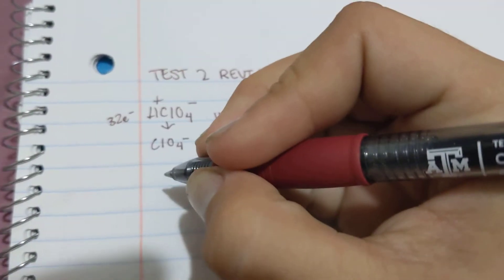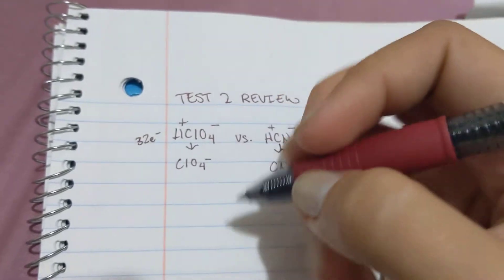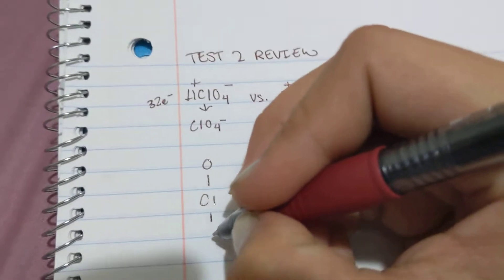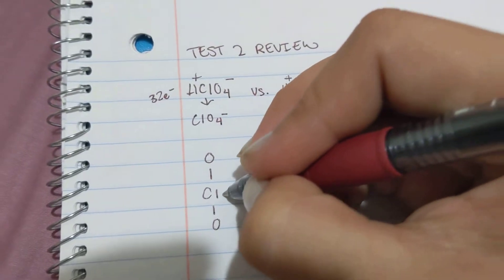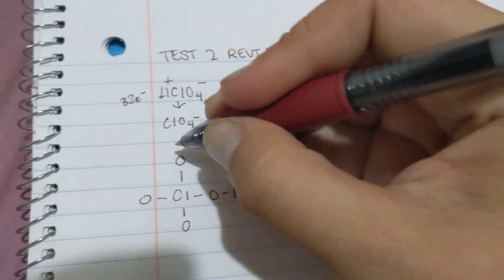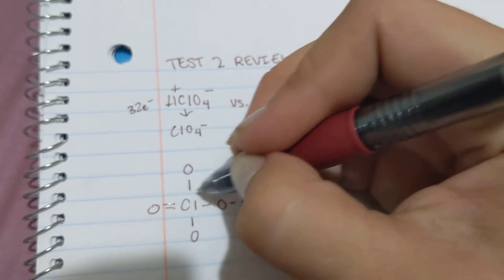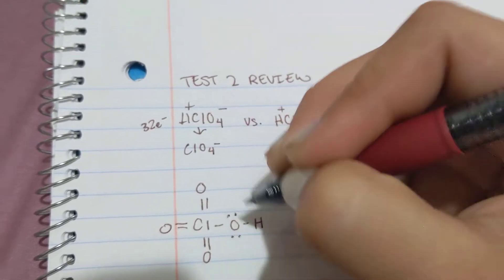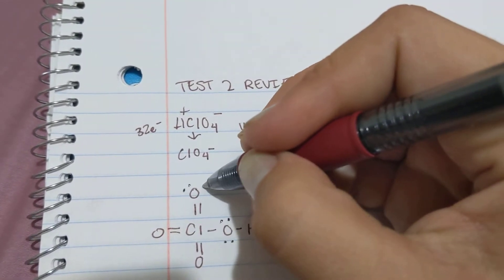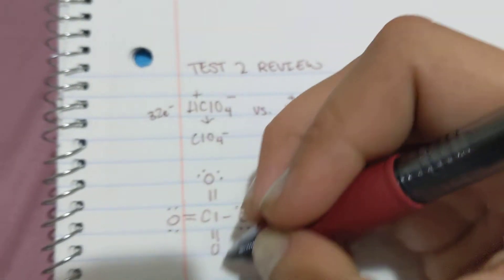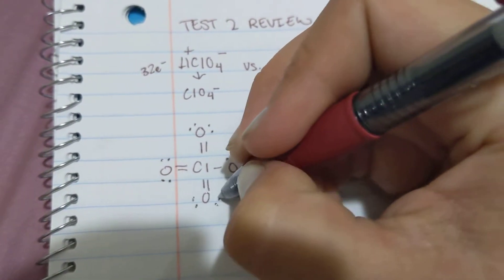Then we draw our Lewis structure of both the acid and its conjugate base. So we'll start with HClO4 which is OClO4H. Then we draw our lone pairs and bonded secondary bonds. This one has two lone pairs here, this one has two lone pairs here. We're trying to use the octet rule to satisfy them.